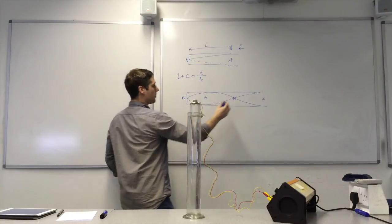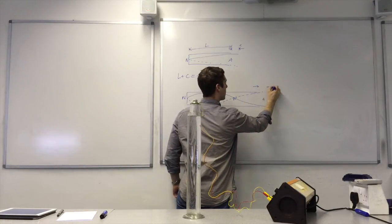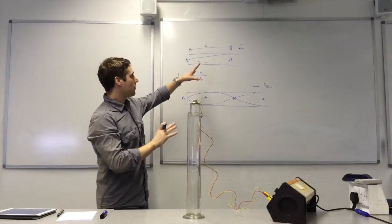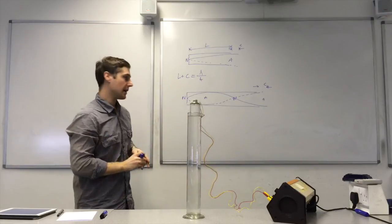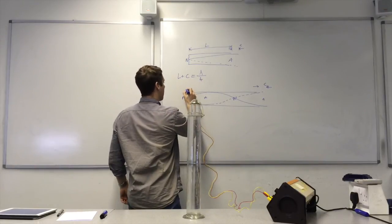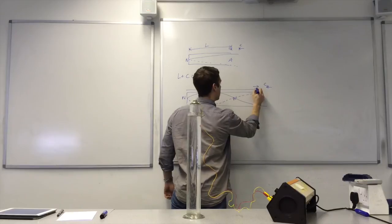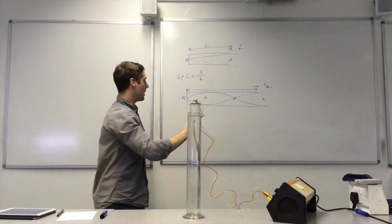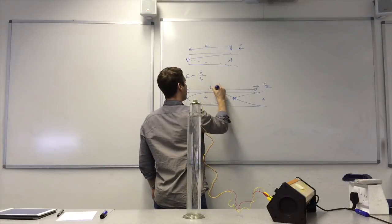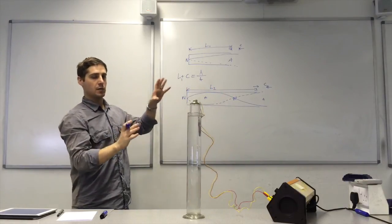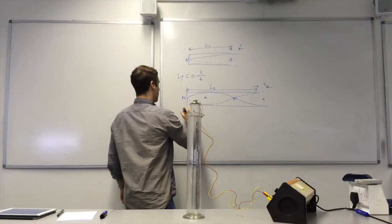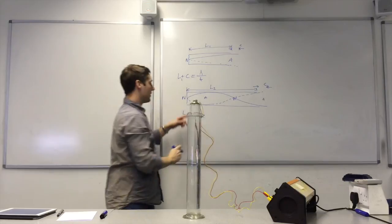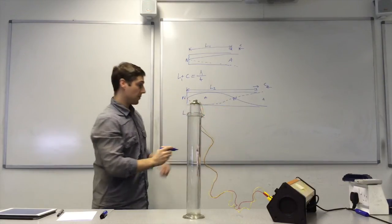This time we still have an end correction. The end correction is going to be similar to the other one if not the same. And then we have the length of the pipe here. Now I'm going to call this one its length L1 and this will be L2. And I will assume that the two end corrections are the same. L2 plus C is equal to three quarters of the wavelength there.